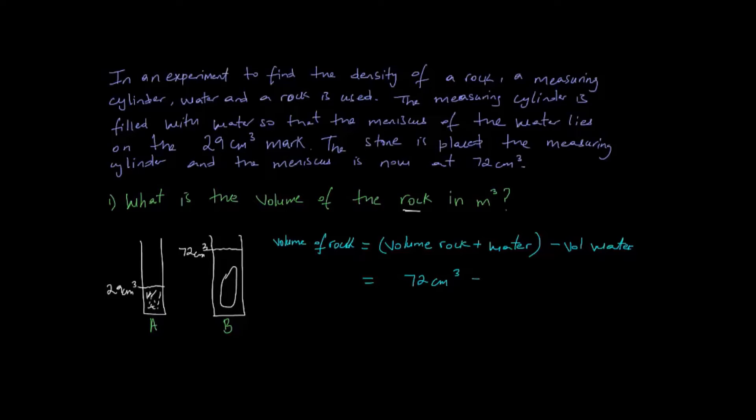So the volume of the rock plus water is 72 centimeters cubed. And that of the water is 29 centimeters cubed. So if we do a subtraction of this here, we get that 72 minus 29 is 43 centimeters cubed.